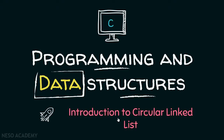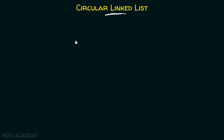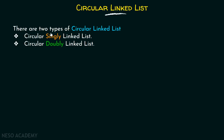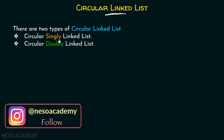From this presentation onwards, we will start with the new topic: Circular Linked List. In this presentation, I will introduce you to the concepts of Circular Linked List. There are two types of Circular Linked List — one is Circular Singly Linked List and the second one is Circular Doubly Linked List.